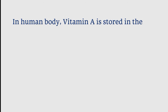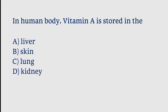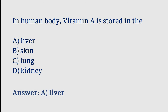In the human body, vitamin A is stored in which organ? Options: liver, skin, lung, kidney. The correct answer is option A. In the human body, vitamin A is stored in the liver.